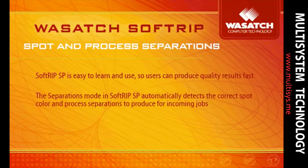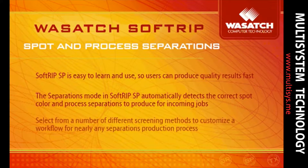The Separations mode in SoftRip SP automatically detects the correct spot color and process separations to produce for incoming jobs, whether files are opened in the RIP by a user or printed directly from application software. You can select from stochastic, rosette, and hybrid screening methods to customize a workflow for nearly any separations production process.